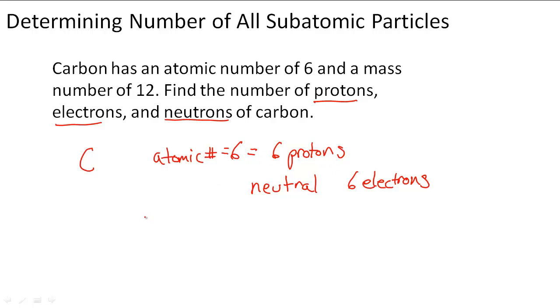Now to figure out the neutrons, or the number of neutrons, we have to use the mass number. So we have to use the mass number subtracted by the atomic number, or the number of protons, to get the number of neutrons.